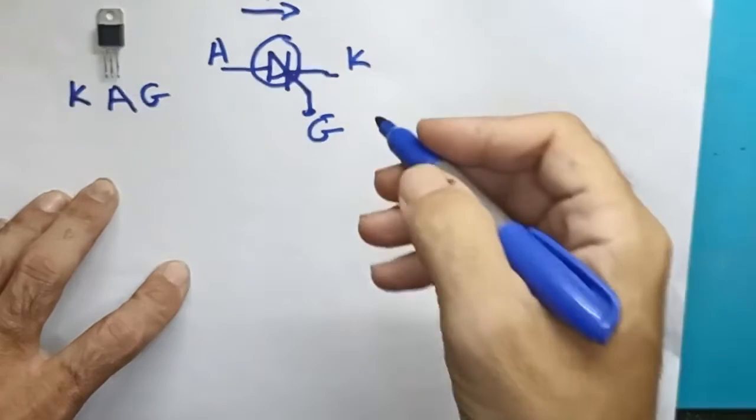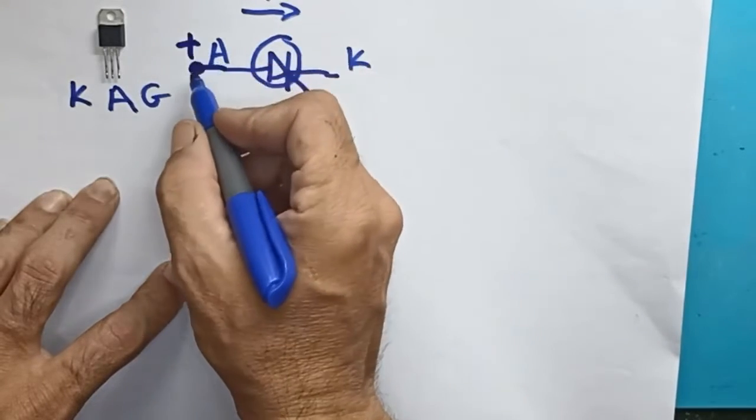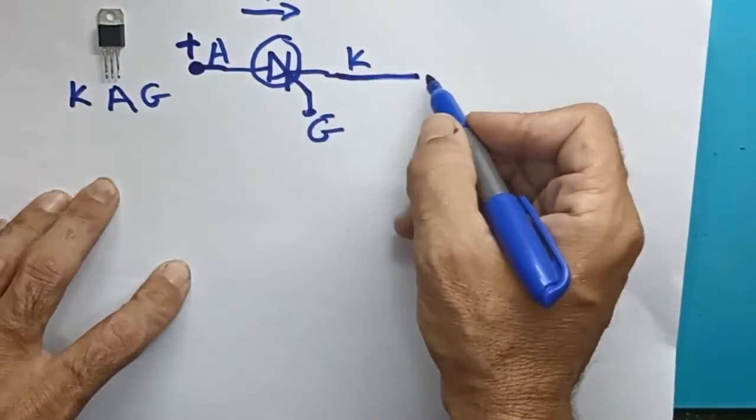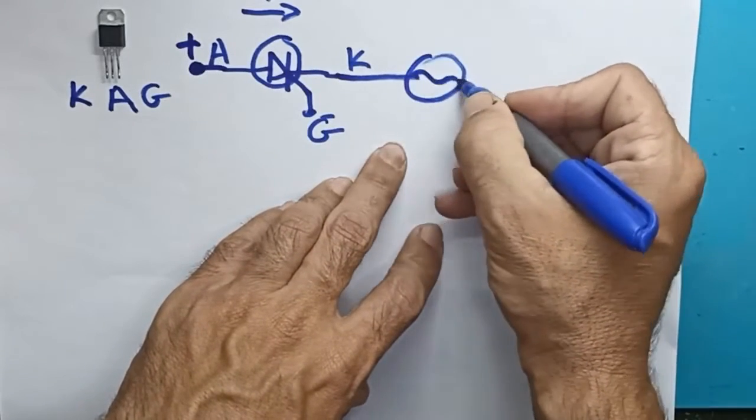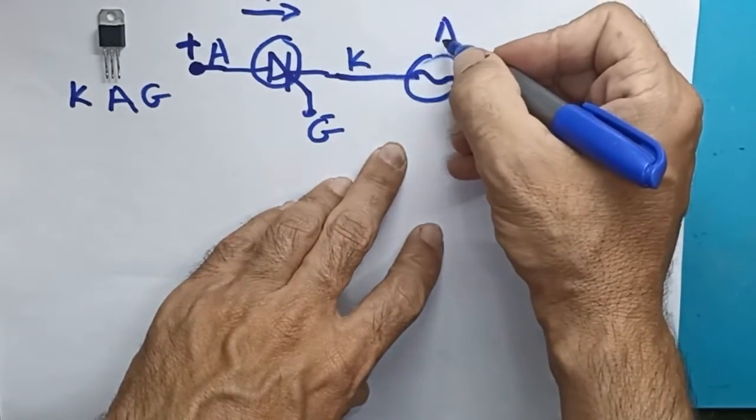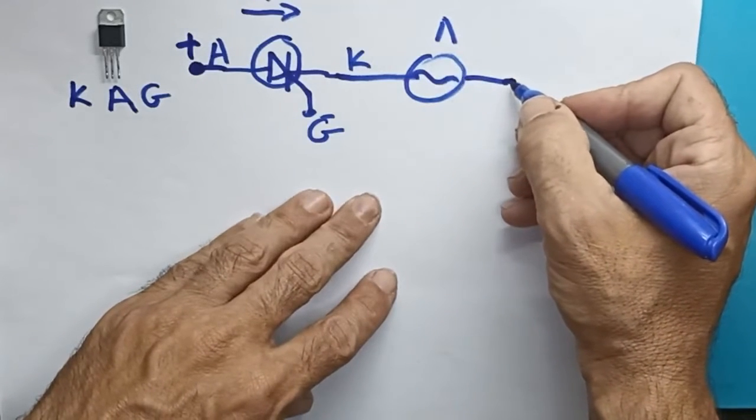We will use a small lamp and 12 volts. We will provide a plus 12 volts from the anode, and from the cathode, we will connect a lamp with 12 volts. And we will continue to connect the plus here of our power supply, meaning a power supply and a bulb.